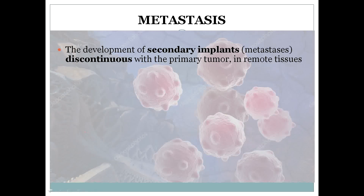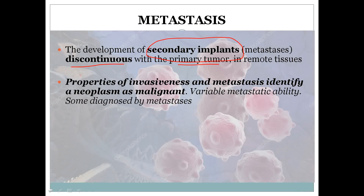Metastasis is the development of secondary implants. The primary implants are at the primary tumor site, but these secondary implants are discontinuous with the primary tumor and occur in remote tissue. If the primary tumor is in the liver, secondary implants could be seen in the bones or lungs — far away from the primary ones with discontinuity. The properties of invasive mass and metastasis identify the neoplasm as malignant.